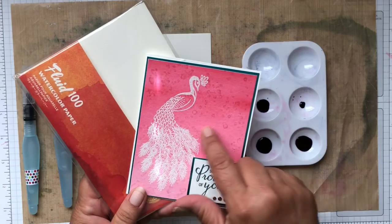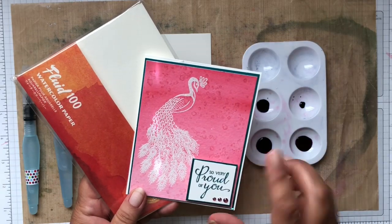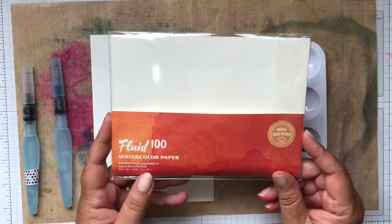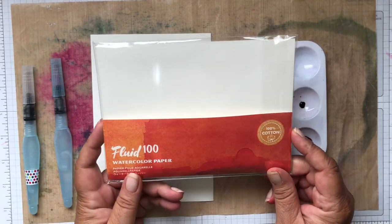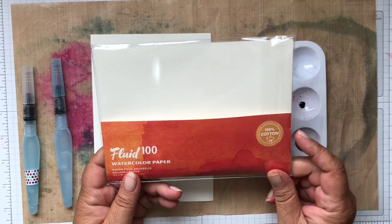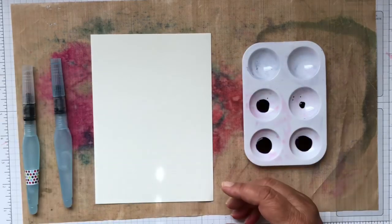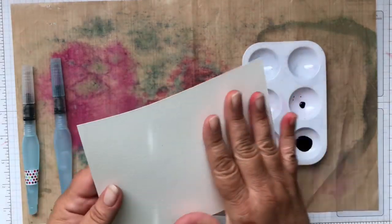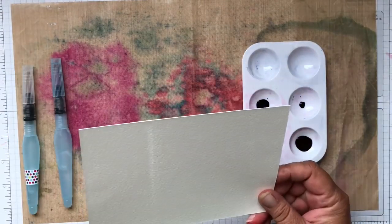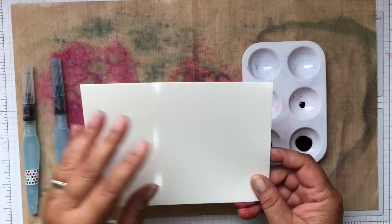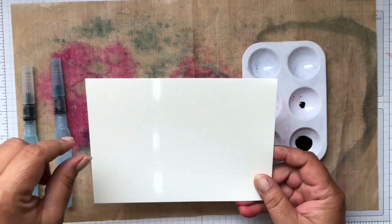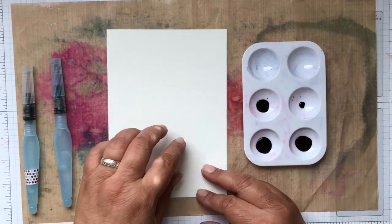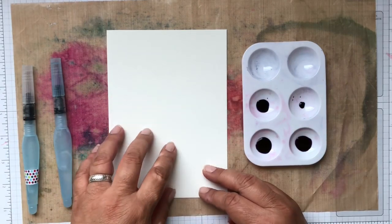To create this look right here of the watercolor background, the watercolor wash, we are going to be using some of our new Fluid 100 watercolor paper. This is different than what was in the last catalog. The main difference that I noticed right off was that it is definitely smoother. Some awesome watercolor paper, I've already been working with it and I really do like it. It's not as pitted maybe as the other watercolor paper was, so we should be able to get some really awesome images, stamped images on this.